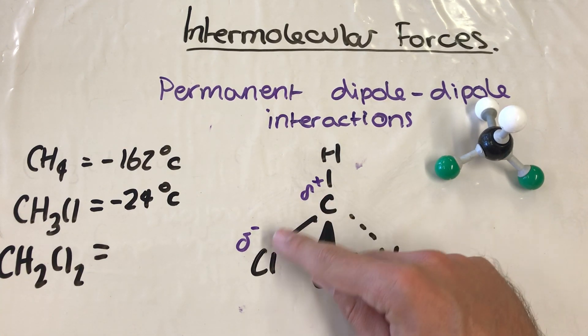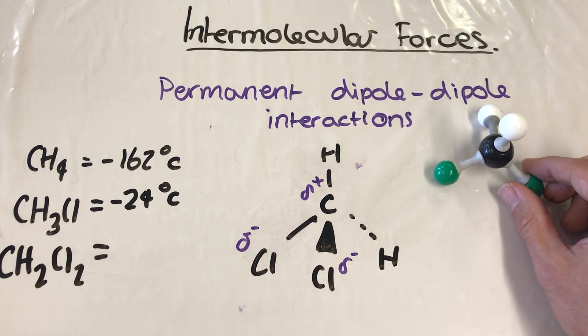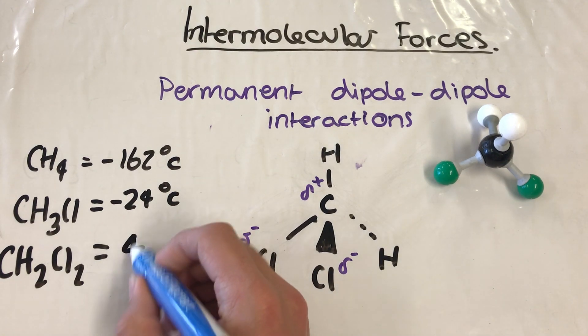So now we have a bigger dipole here. So we have a greater dipole. The effect of that is to actually have a stronger intermolecular force again. So dichloromethane, its boiling point, is roughly 40 degrees Celsius.